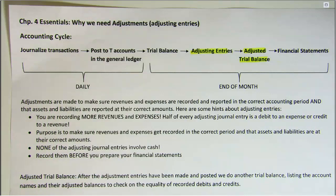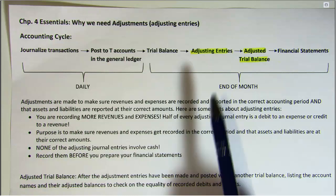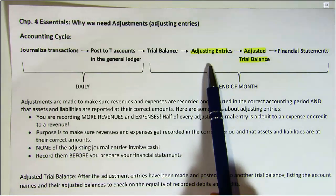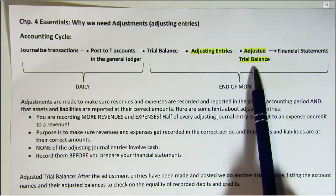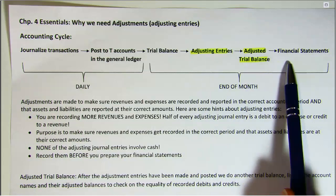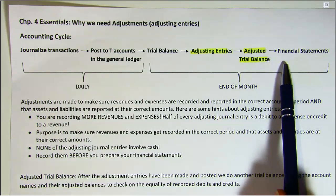However, there's actually another step called preparing the adjusting journal entries — that's right here. And then after that we prepare an adjusted trial balance before we prepare the financial statements.